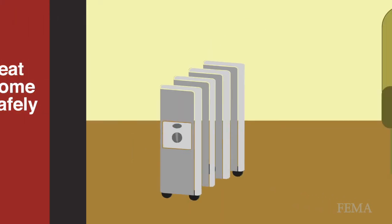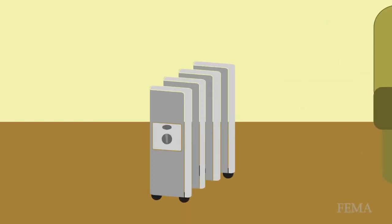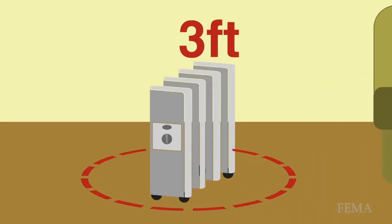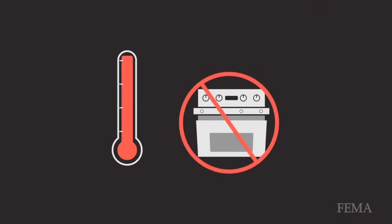Heat your home safely. Turn off space heaters when not in the room. Keep a three-foot safety zone around any heat source and never use an oven to heat your home.